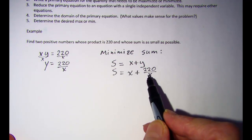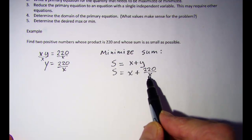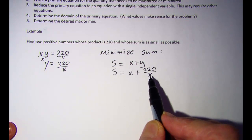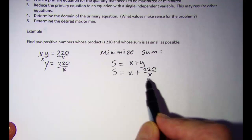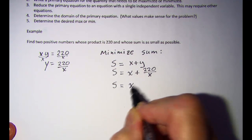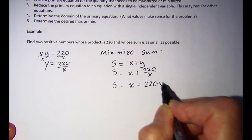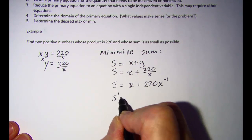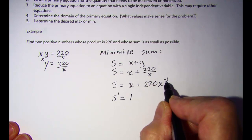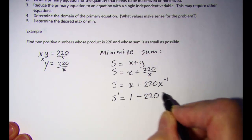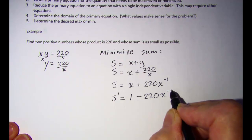Now in order to find a max or a min I need to find the derivative of this expression and set it equal to zero. I'm going to rewrite the expression using a negative exponent, so s is equal to x plus 220 times x to the negative 1. My derivative then is 1, and the power rule gives negative 1 times 220, so negative 220 times x to the negative 2.